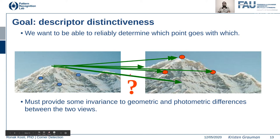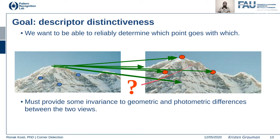Similarly, feature descriptors should be very distinct. If a feature is not distinct enough, it can map to multiple points in another image, which we don't want. We want to reliably determine this feature across images, so it should be unique. It should also be invariant to some geometric and photometric differences — for example, if the right image is a scaled version of the left, the feature descriptor should be robust enough to be localized in both.